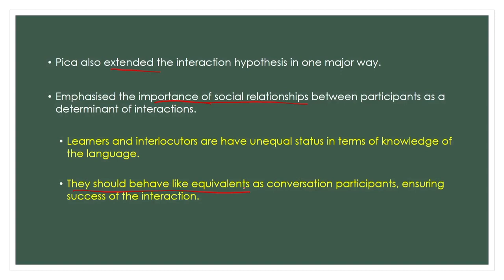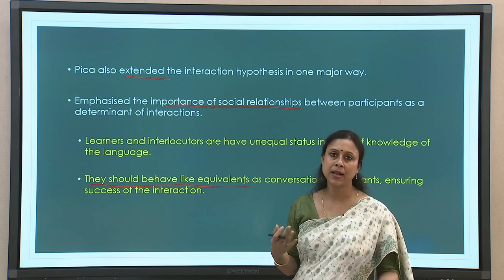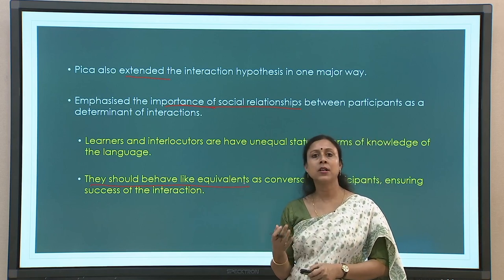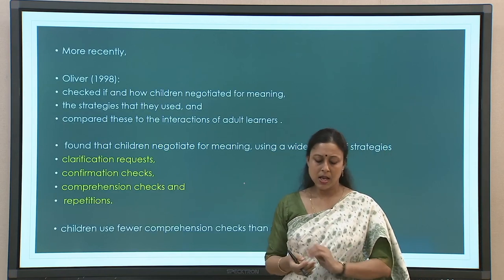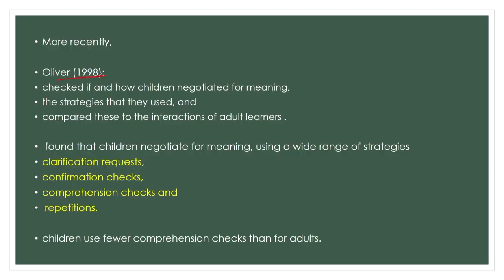In more recent times, Oliver worked in this area, looking at whether children and adults have different interaction strategies in various scenarios — specifically how children negotiate for meaning, the strategies used for getting clarifications, and if these interactions differ for children and adults. They found that children typically use clarification requests, confirmation checks, comprehension checks, and repetitions — as seen in earlier studies. However, an interesting finding was that children use fewer comprehension checks compared to adults.